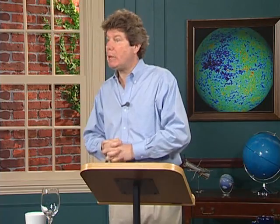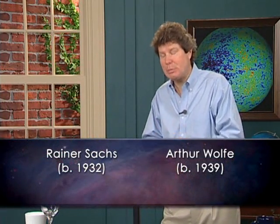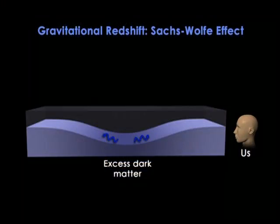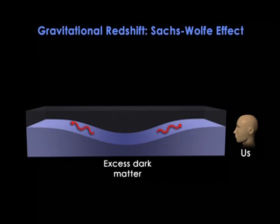The second effect was one of the first to be discussed back in the mid-1960s by Rainer Sachs and Artie Wolff, and it's called — perhaps not surprisingly — the Sachs-Wolff effect. It's really very simple. Imagine a photon coming from the middle of a region of excess dark matter. As the photon leaves the region, it has to sort of climb uphill to get out of the valley — where uphill means against the pull of gravity. Climbing uphill drains some of the photon's energy, so it gets redder. This is called a gravitational redshift, and it means that over-dense regions will appear slightly darker on the microwave background.